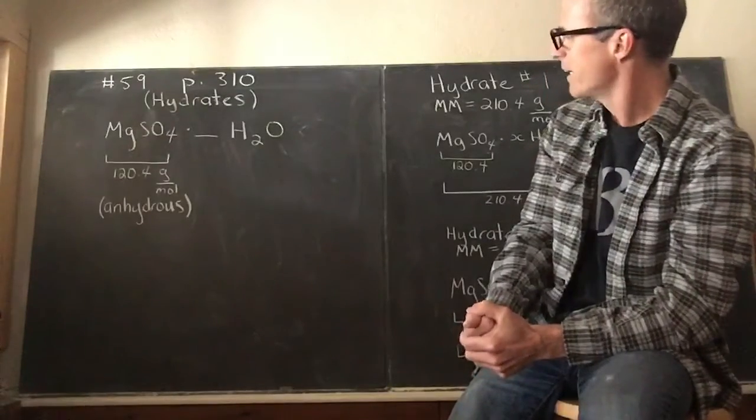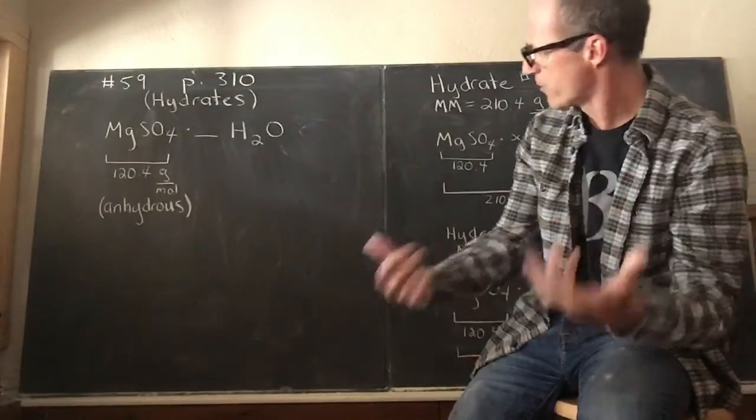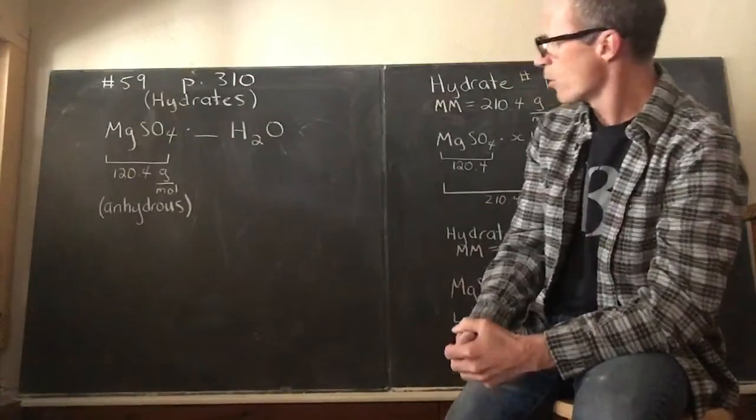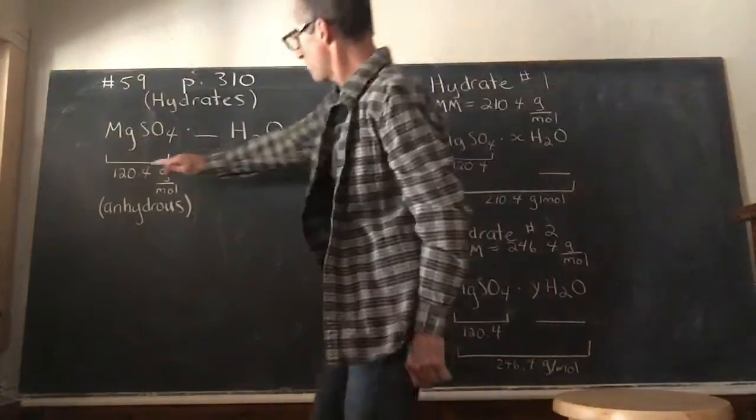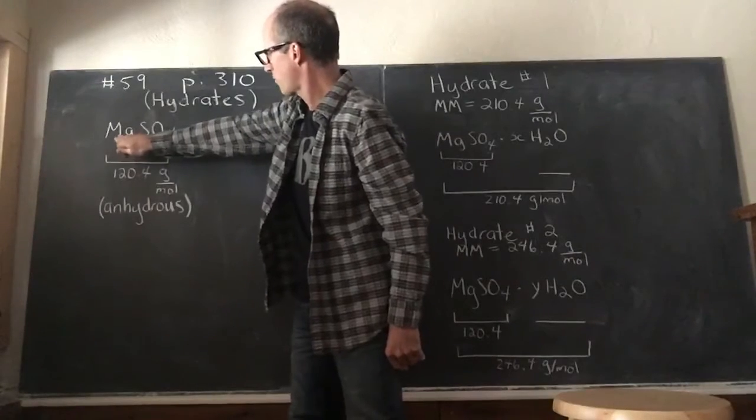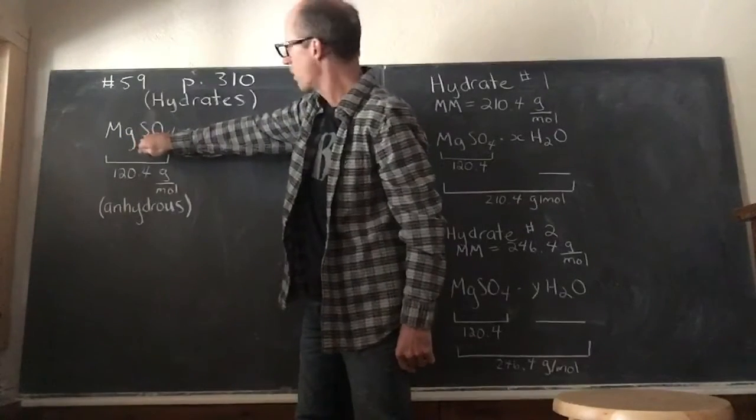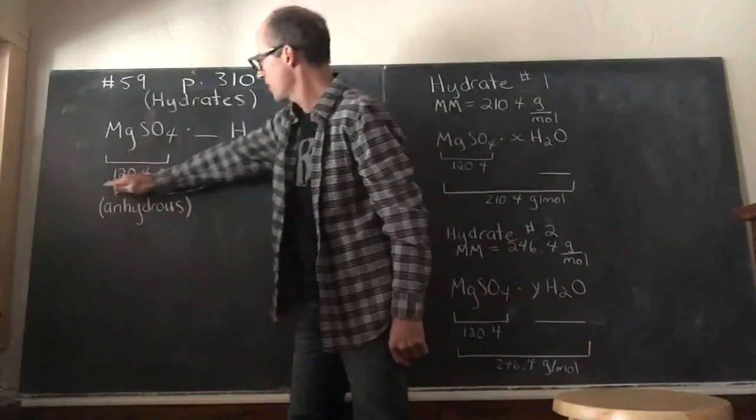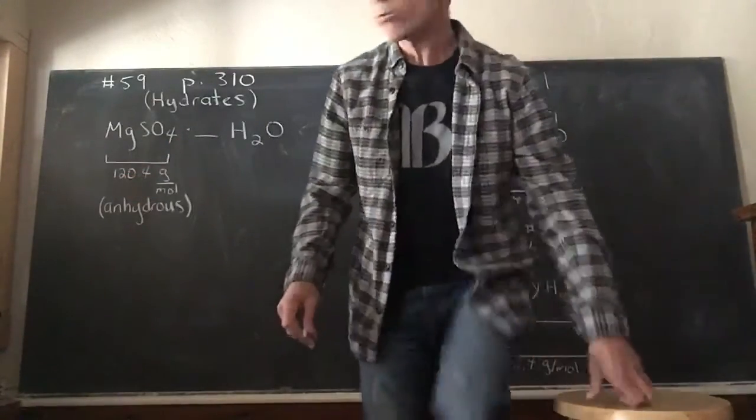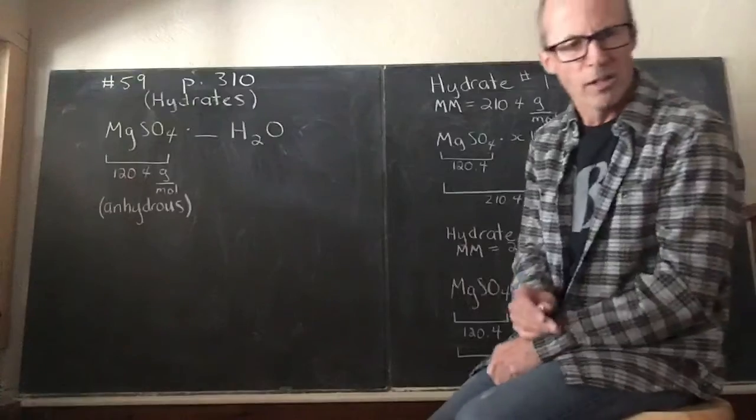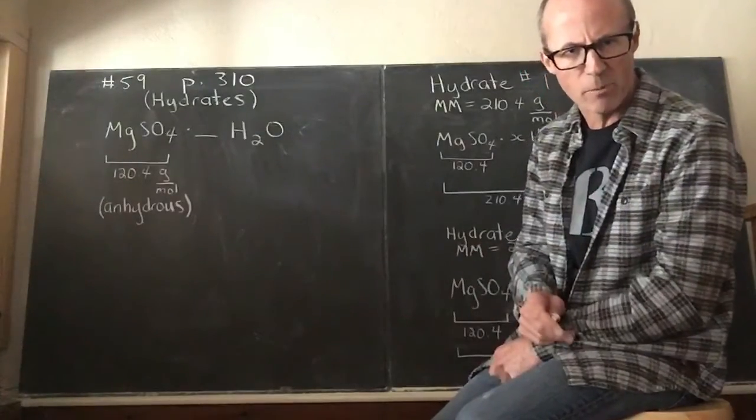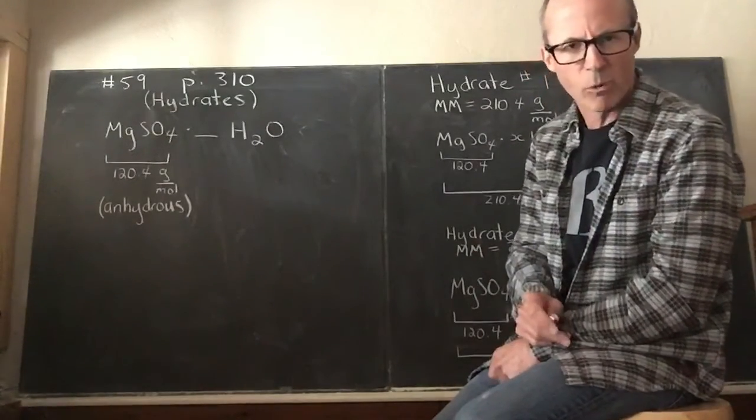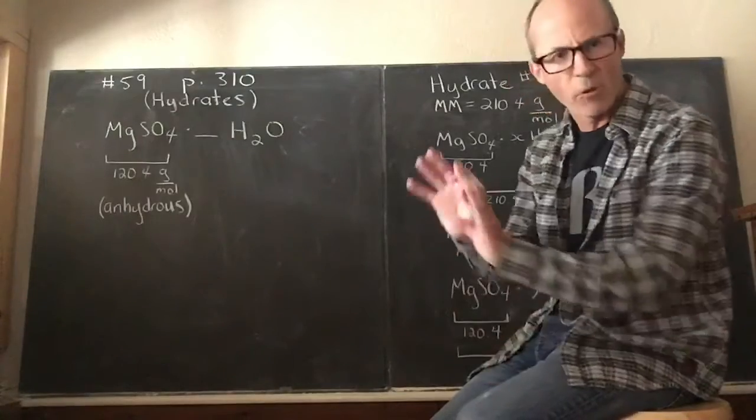When we look at magnesium sulfate on its own by molar mass—and I skip this step because I trust you can all add 24.3 plus 32.1 plus 4 times 16, which is 64—gives us 120.4 grams per mole. So that's what the magnesium sulfate would weigh on a molar basis without the waters.